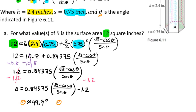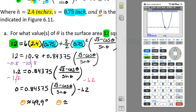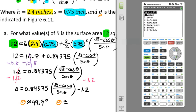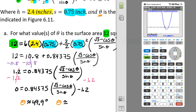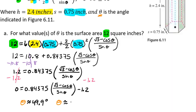Remember, there were two intersection points, so we're going to have another theta as well. So we go to 2nd, Trace, option number two again. We move to the left-hand side, then the right-hand side, and our intersection point is between our two cursor positions. We hit enter, and that gives us 59.86 — so approximately 59.9 degrees. So we have now found for what values of theta the surface area is 12 square inches.